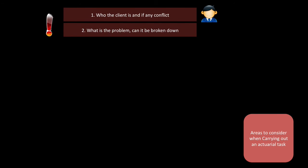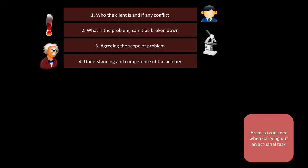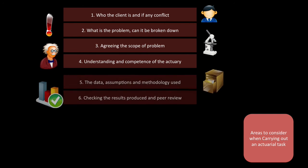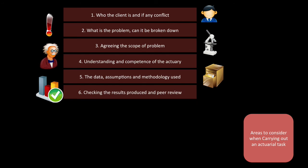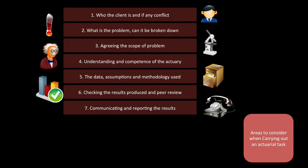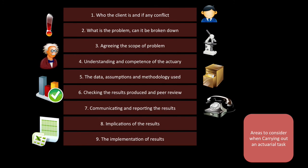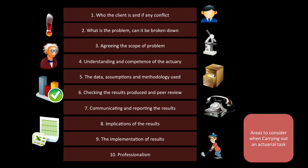Areas to consider when carrying out an actuarial task — there are ten points. First, know who your client is and if there's any conflict. Second, what is the problem and can it be broken down. Third, agree what the scope of the problem is. Fourth, understand and have competence as an actuary. Fifth, what is the data, assumptions, and methodology you're going to use. Sixth, check the results that you produce — maybe get a peer to review it. Seventh, communicate and report the results well. Eight and nine refer to the results, the implication and the implementation of them. And finally, ten: have you been professional.